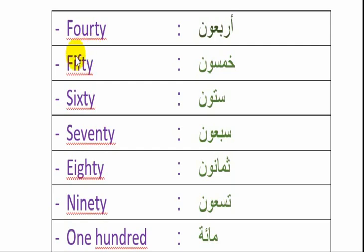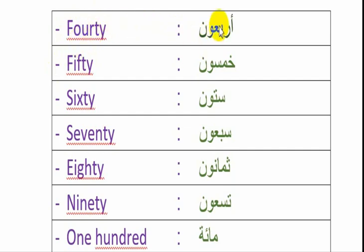الآن سنرى الأعداد التي هي أعشار. العدد الذي رأيناه هو 30. 40 هي أربعون. 50 هي خمسون.